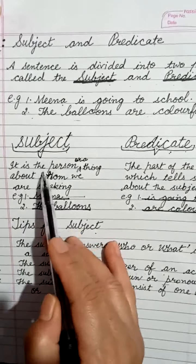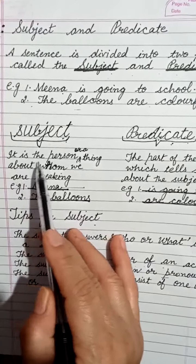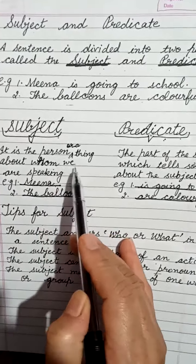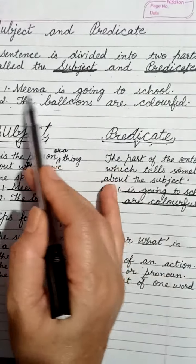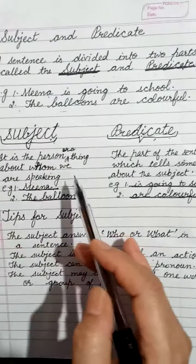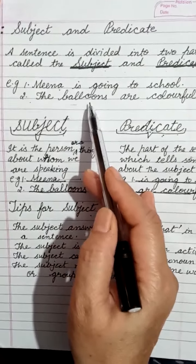What is the subject? In the sentence, it is a person or a thing about whom we are speaking. As in the first sentence, we are speaking about Mina, so the subject is Mina. And in the second sentence, we are speaking about the balloons, so the subject is the balloons.